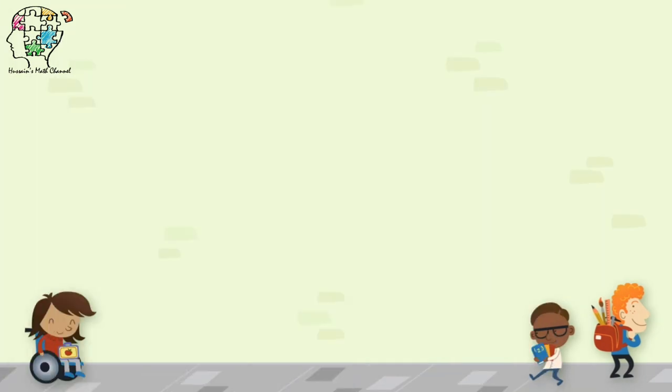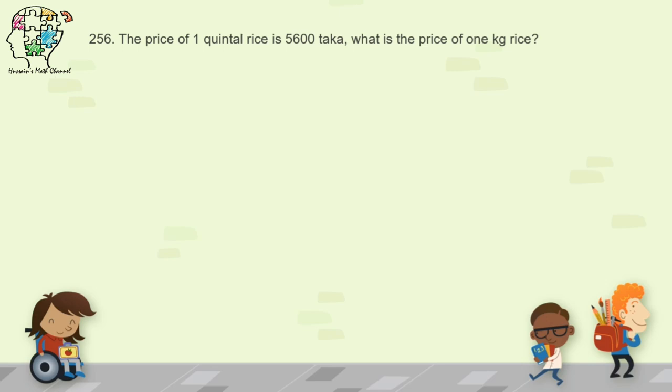Question 256: the price of one quintal of rice is 5,600 taka — what is the price of one kilogram? One quintal means 100 kilograms, so divide 5,600 by 100. The answer is 56 taka.